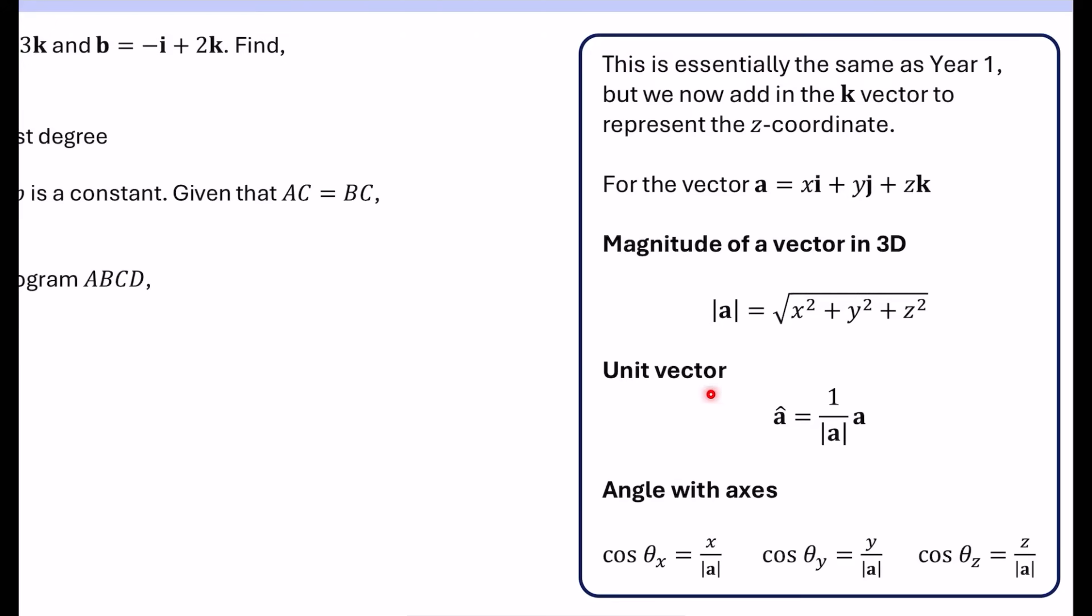And hopefully you've already revised this from Year 1 vectors, but a unit vector is you take the original vector, which is our x, y, z one that we have here. And if you want to make its magnitude a length of one, you just divide by its current magnitude, which should make sense, right? If the magnitude of a vector is five, if it's five units long, if you divide everything by five, then you're going to end up with something that's a fifth of the length. And it now has a magnitude of unit length, in other words, a length of one.